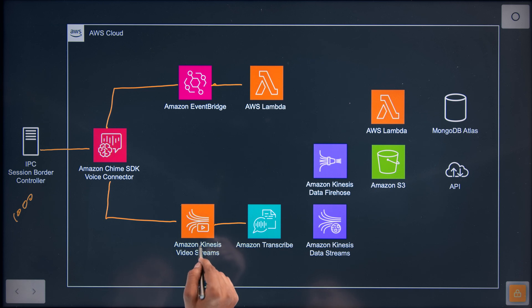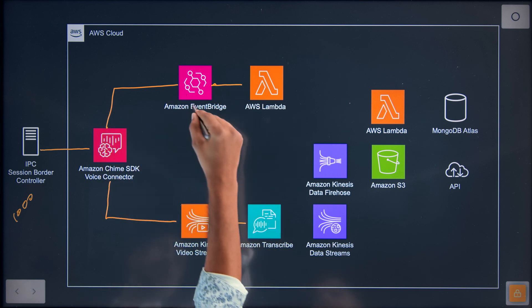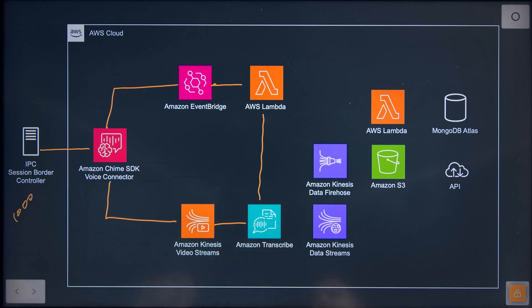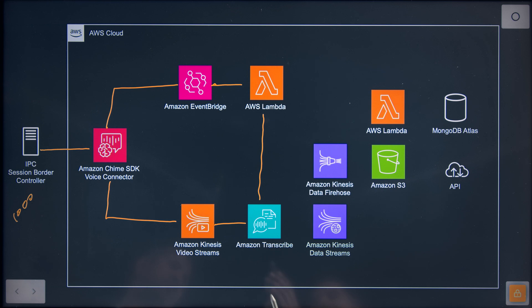On one hand, voice is going into Kinesis streams. On the other hand, EventBridge comes into play, triggers a Lambda. It extracts some metadata from the SIP connection and sends it into the Transcribe solution. The reason it does that is there are thousands of lines on the left-hand side of the architecture, so we have to make sure the right conversation gets made available to the right customer. Security, customer privacy — all aspects of trading and voice communication are key for us. So the Lambda feeds some information into Transcribe.